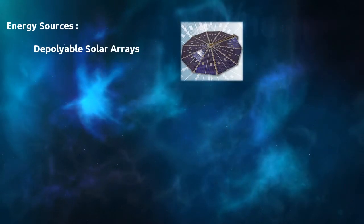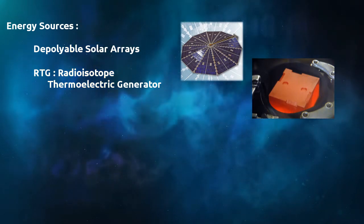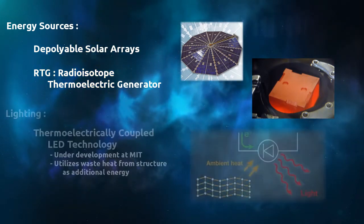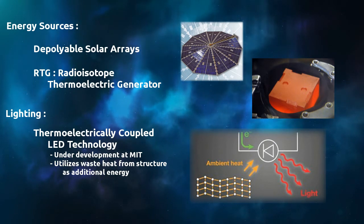Solar arrays and RTGs will provide the energy required to power the DIGS, providing enough wattage for all spacecraft functions. Illumination will be provided from a new technology under development at MIT, a thermoelectrically coupled LED system with more than 100% efficiency absorbing heat from the surrounding structure.